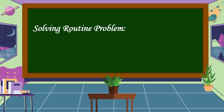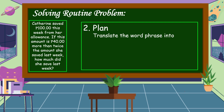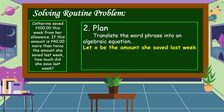The next step is to formulate a plan. We're going to translate the word phrase into an algebraic equation. Let x be the amount she saved last week. The algebraic equation is: 2x plus 40 is equal to 100.